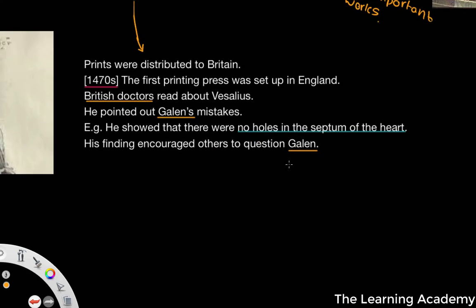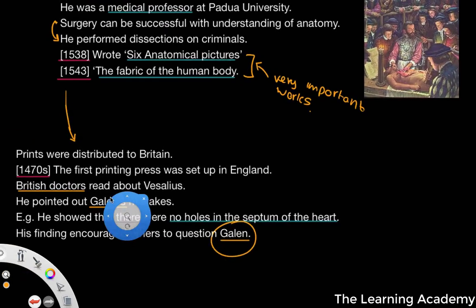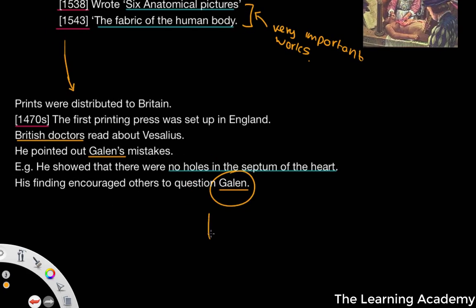Since Galen was a classical thinker, his works were almost seen as infallible — you couldn't question them or encourage any sort of discussion. They were seen as the most accurate, up-to-date, modern interpretations. So when people like Vesalius came along and dissected human bodies and found flaws in Galen's work — like no holes in the septum — it gave others the confidence to question and research and critically analyse Galen's work. That is what effectively leads to the development of medicine.